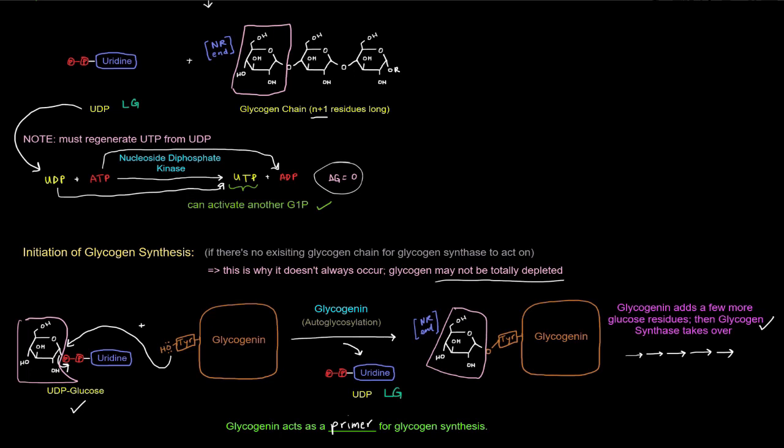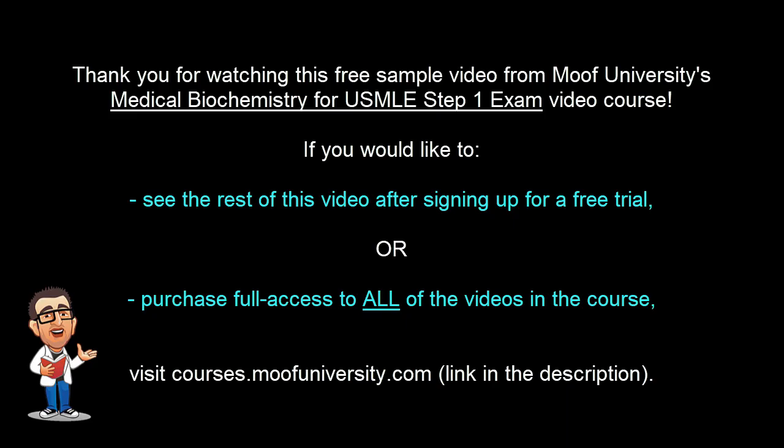So now, all I've shown you so far is the making of these alpha 1,4 linkages, right? This is an alpha 1,4 linkage. What happens at the branch points?